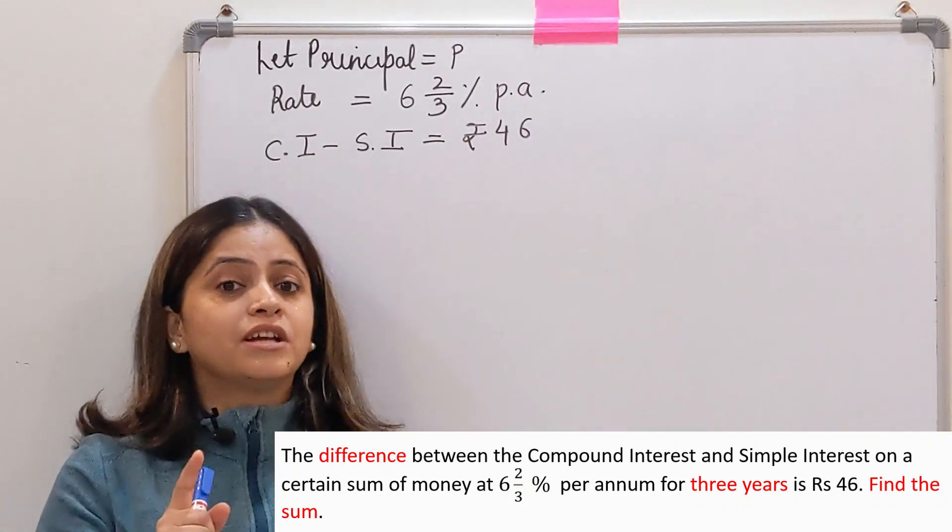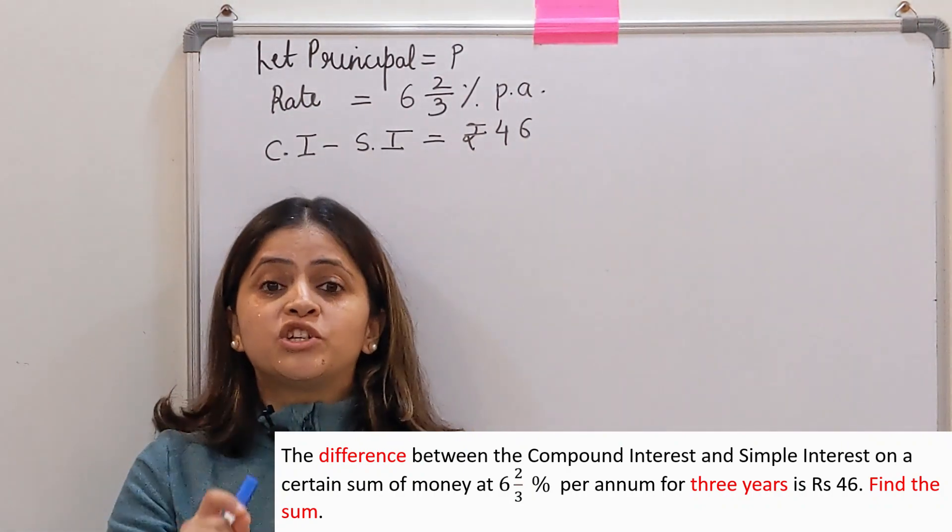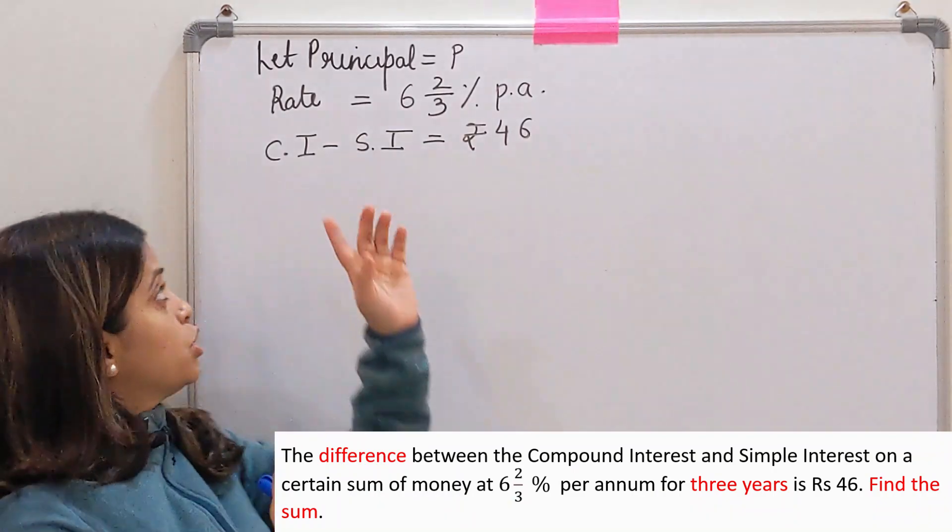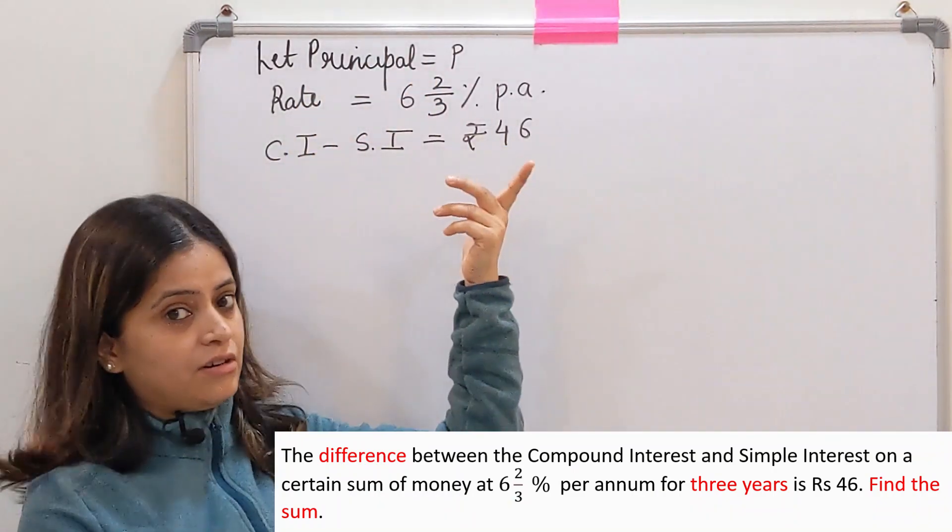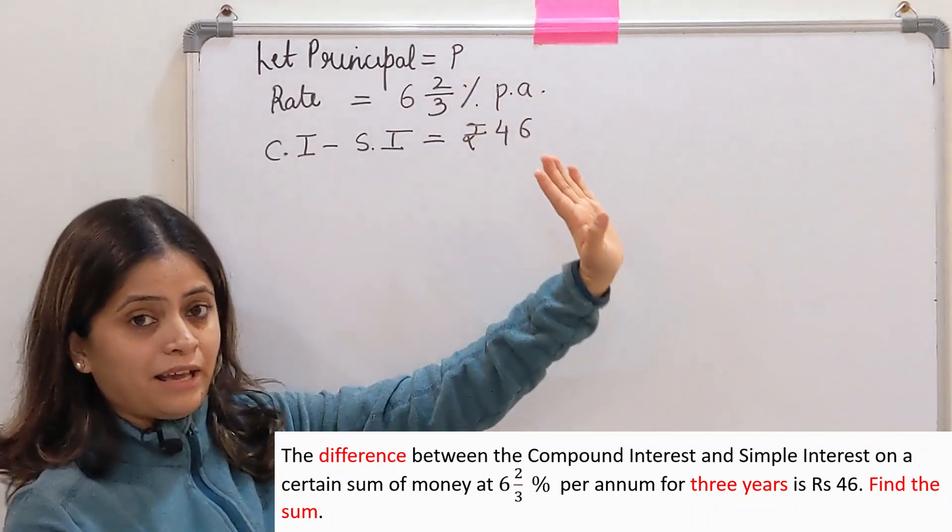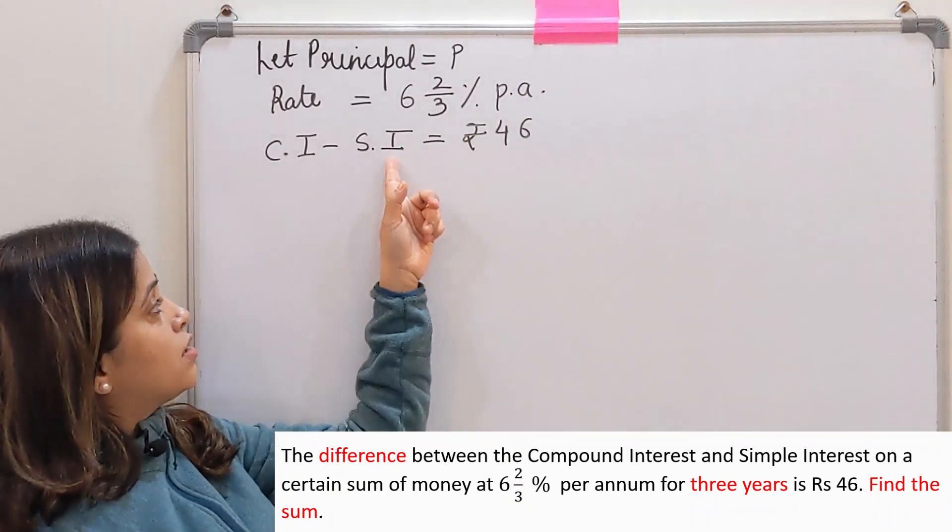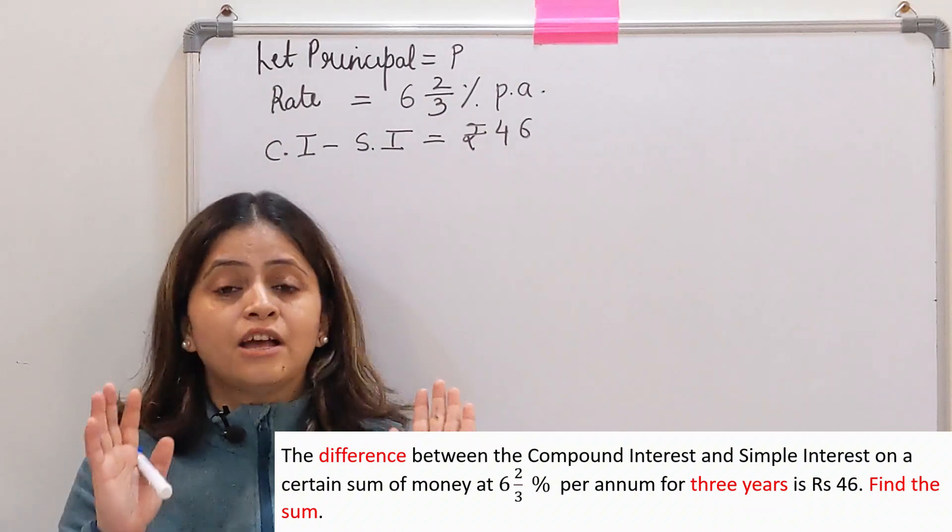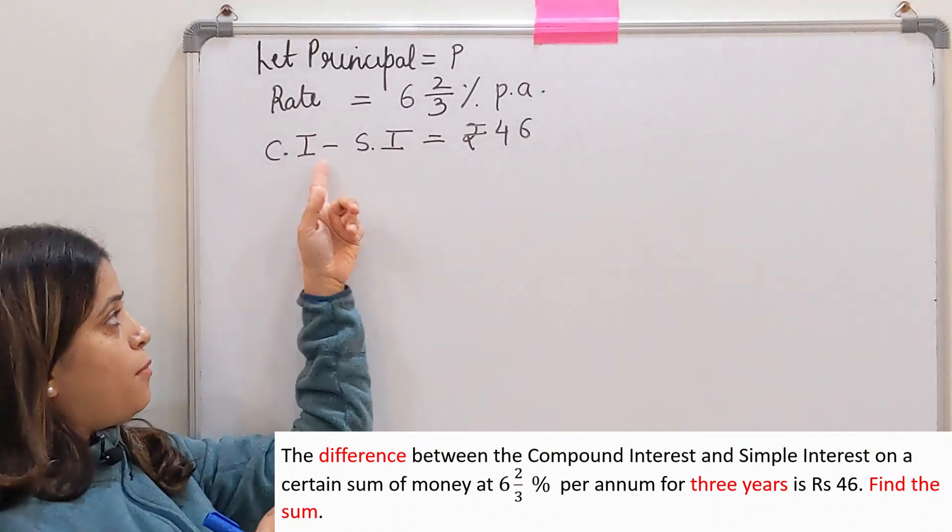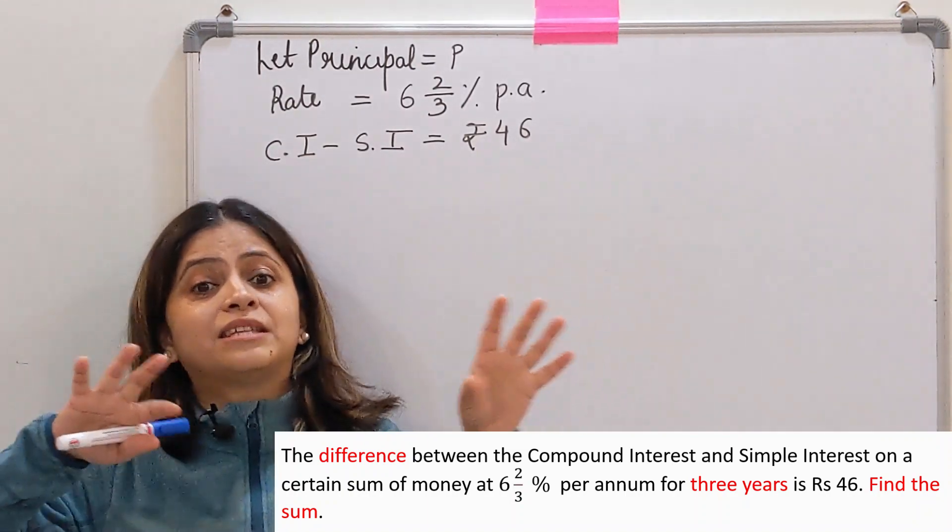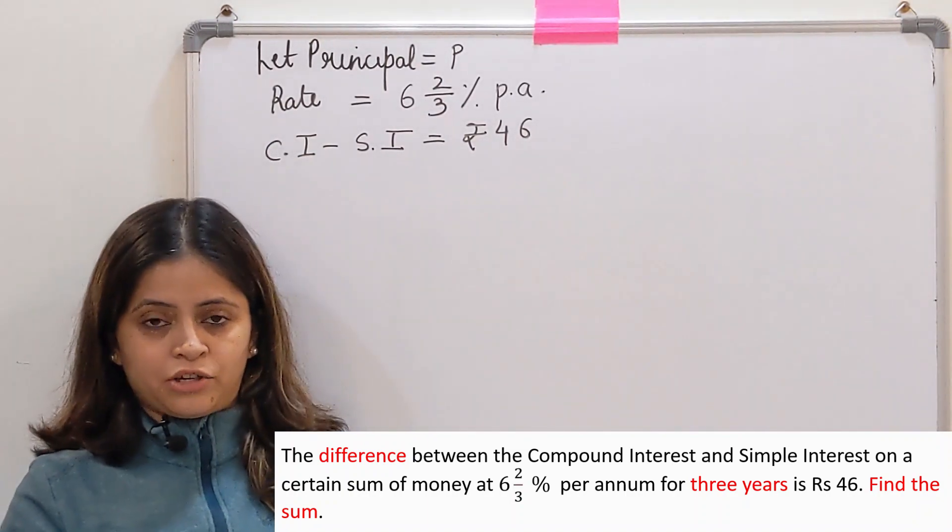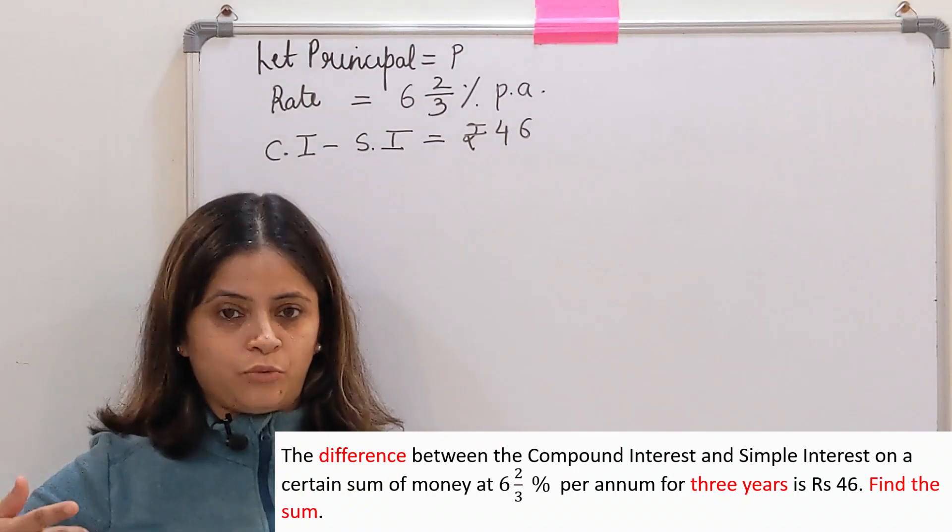In this question the difference between compound interest and simple interest is given, and we are supposed to find the sum which is the principal. So let principal equal P. Rate of interest is given as 6⅔% per annum, and the difference is Rs 46. We will find simple interest and compound interest separately and then use their difference.